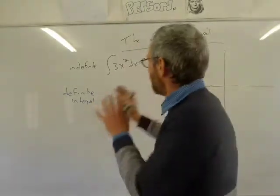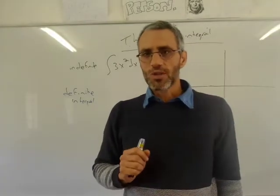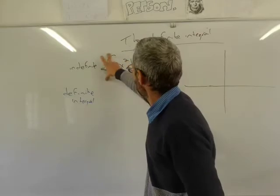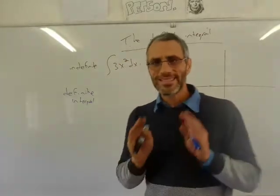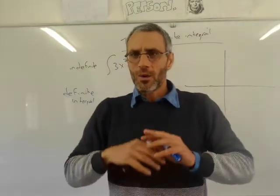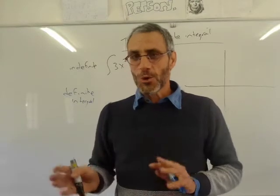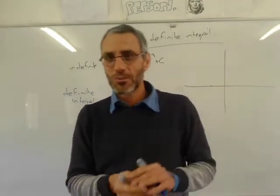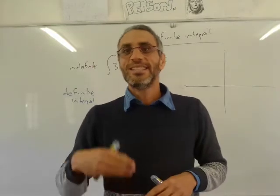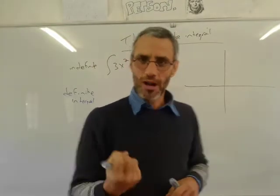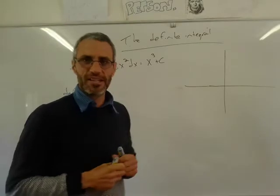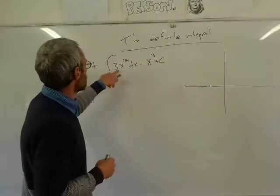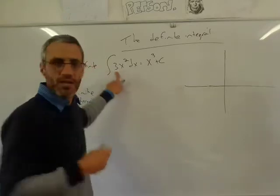That is called the indefinite integral. When we do that, we just put a function here with nothing on top or at the bottom — we call it the indefinite integral. Now, what does that mean? We don't know yet. But if there is an indefinite integral, you probably won't be surprised that there's such a thing as a definite integral. To understand what the definite integral is, we need to draw the curve — in this case, 3x squared. It's a parabola.